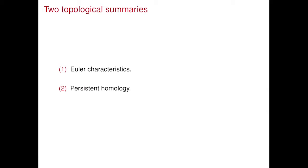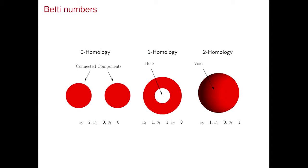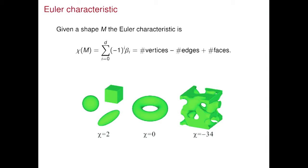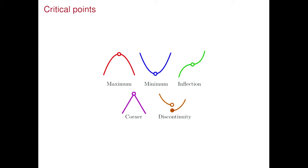The tools I'm going to use are two topological summaries. One is called the Euler characteristic, and the other is persistent homology, which Gunnar showed earlier. We saw Betti numbers earlier — the number of connected components, or one-holes, or two-holes. The Euler characteristic is the alternating sum of Betti numbers. For the 3D mesh data I'm working with, it's really the number of vertices minus edges plus faces. This goes back to the Königsberg bridge problem, and it is a topological invariant.